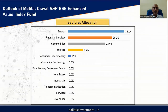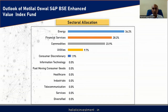The index has only 5 sectors: Energy, Financial Services, Commodities, Utilities, and Consumer Discretionary. Utilities and Consumer Discretionary together amount to only about 10%, so the balance three sectors — Energy, Financial Services, and Commodities — amount to 90% of the portfolio. Again, there is a clear concentration risk here.